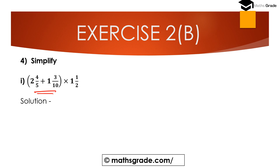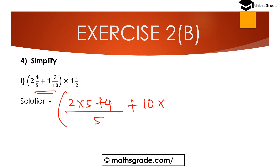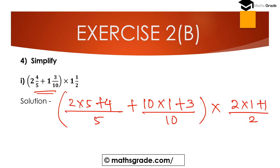Multiply the denominator 5 by 2: 5 multiplied with 2, then add the numerator. So 2 multiplied with 5 plus 4 divided by 5, plus denominator 10 multiplied with 1, plus 3 divided by 10. So 2×5 is 10, 10 plus 4 is 14, giving 14/5. Plus 10 plus 3 is 13, giving 13/10.